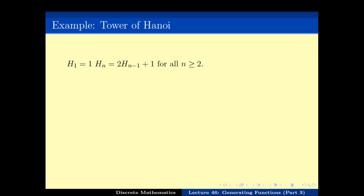For generating functions we always start by defining the generating function — the polynomial. Here P(x) is defined slightly differently: as H1 + H2*x + H3*x² + and so on. So the coefficient of x^n is H(n+1) — remember that, it is most important. H0 is not defined because H0 is not known.